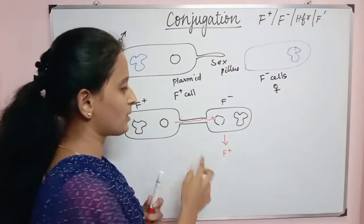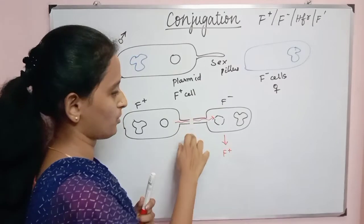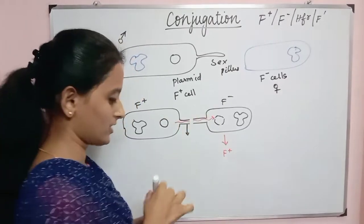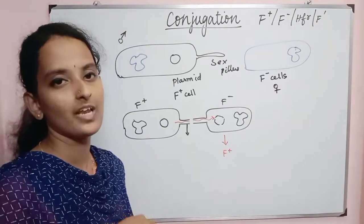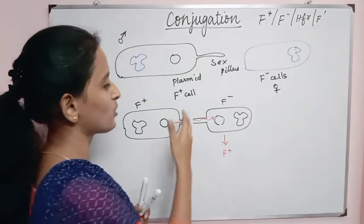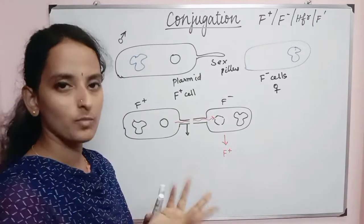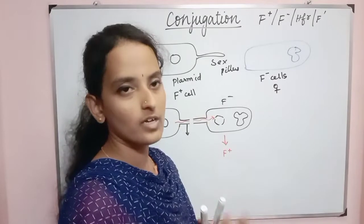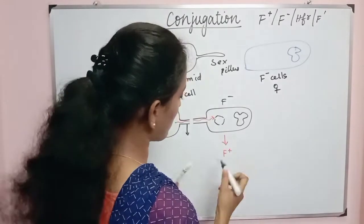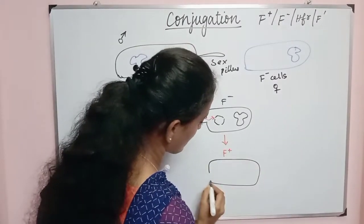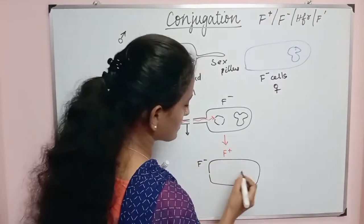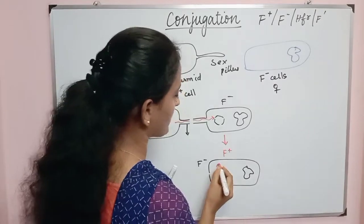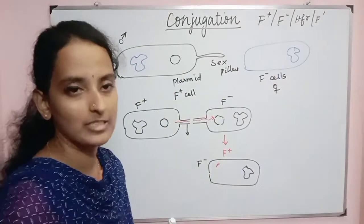If any disturbance occurs in the conjugation tube — for example, aquatic waves cause the conjugation tube to be cut — only a small strand of DNA will pass to the F- cell. So a small strand of DNA enters the F- cell's chromosomal DNA region. This small strand of DNA passes to the F- cell along with a portion of F plasmid.